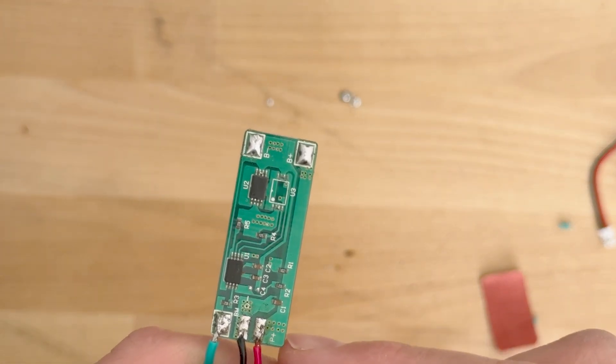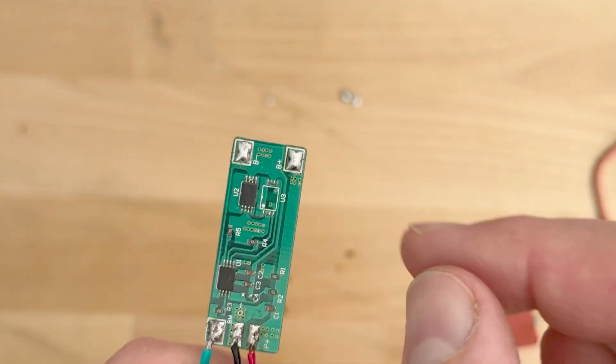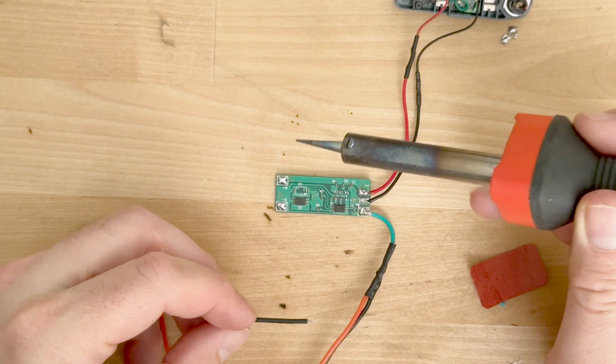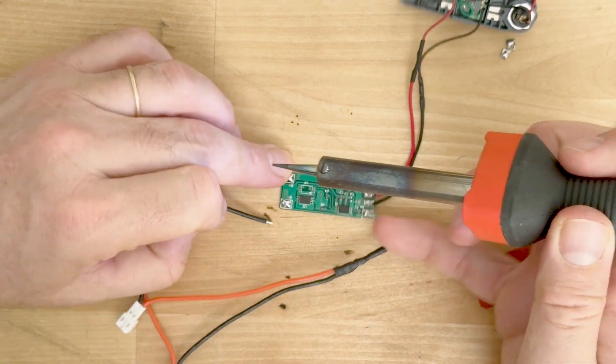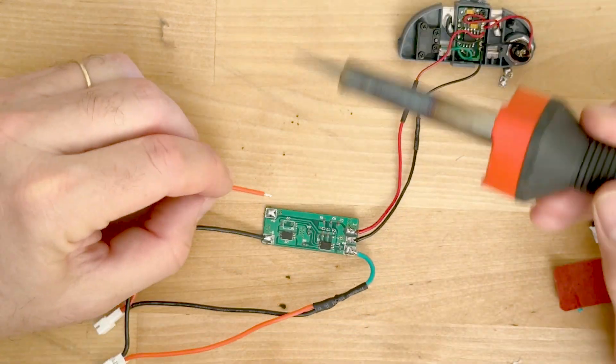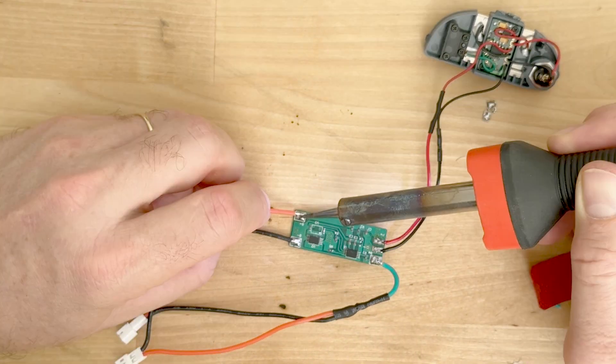So there you go, we've got our positive, negative, our jumper, and then on this other end this is what we're going to connect our new harness to. And this is our connector to the batteries.